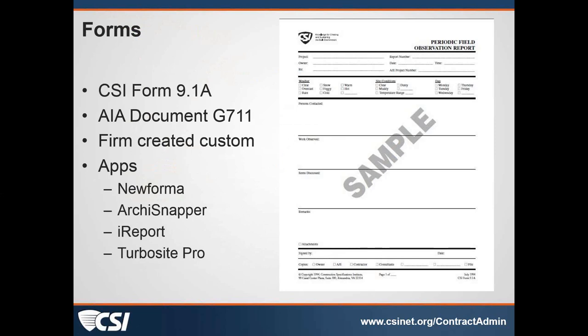One thing I like about the Newformer app is that it actually tracks items that are deficient or non-conforming to the work so that those things don't get lost by the wayside. I have used Newformer on a limited basis, but none of the others, so I'd be interested to hear what anybody in the audience has experience with. I'm in the same boat — we've been doing it electronically but haven't really used the apps, and I'd be very interested in hearing about them.